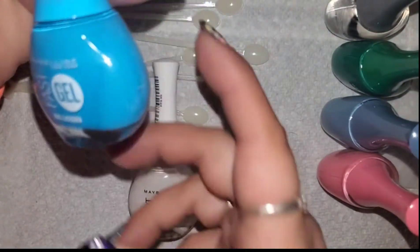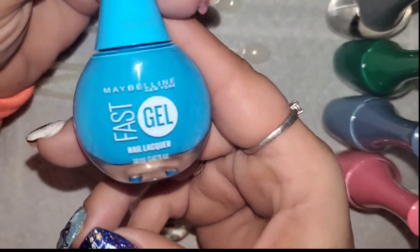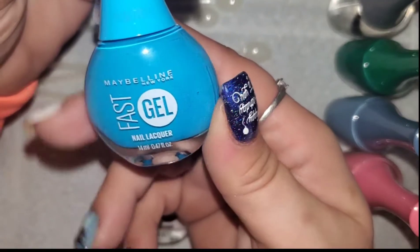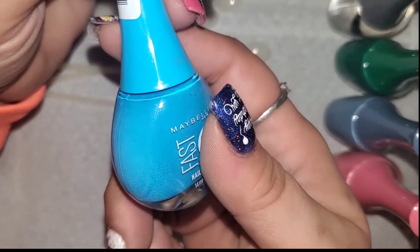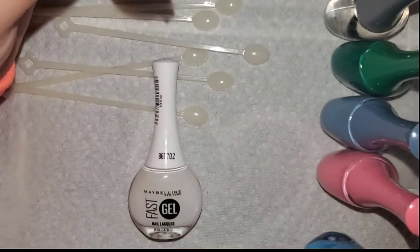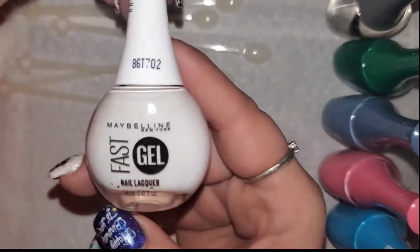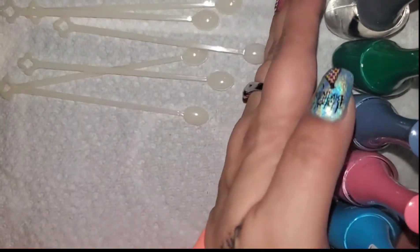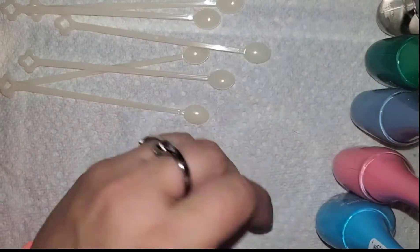You can do some reverse stamping with these, so you can color your images in. This is Turquoise Tees 235, just this really pretty baby blue. Then I got white because white and black are a must when you do nail art.